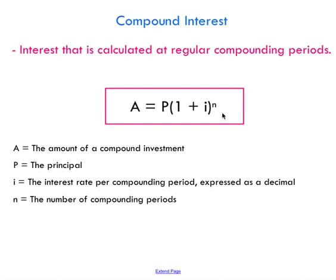The formula we're going to use for compound interest — A is the amount of a compound investment, so this is how much money the investment is going to be worth. P is your principal, what you put in — that's your initial investment. i is the interest rate per compounding period, and we usually express the interest rate as a decimal. N is the number of compounding periods.